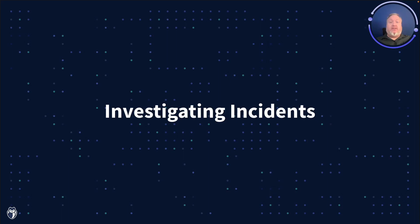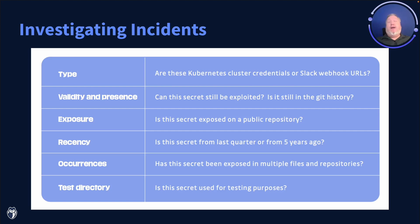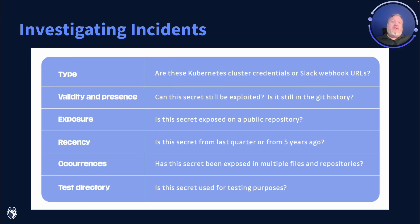Now that you've prioritized your incidents and know what order to tackle them in, the next thing to do is to investigate those incidents. Some of these data points might look familiar, as much of it crosses over from the prioritization process. We suggest you identify what type of secret you're dealing with, the validity and presence of that secret — by presence we mean does it still appear in your Git history — exposure, whether the affected repository is public or confined to your internal systems, whether this is a recent secret or from long ago, how many occurrences there are, and finally whether this is in a testing directory. If it is, it's most likely an invalid test credential only.